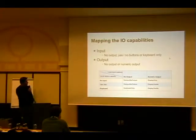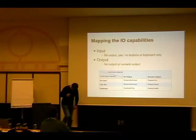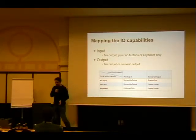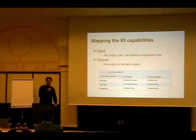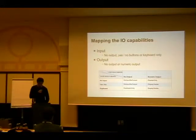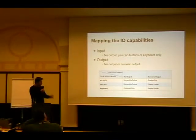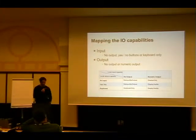The specification has a chart mapping IO capabilities. For input, you can have no input, a yes/no button, or a full keyboard. They separate between having two buttons versus a full keyboard — with a full keyboard you can enter a pin, while with only yes/no buttons you can only confirm whether the pin code is correct. For output, you have either no display or the ability to display a numeric number. In the end, the numeric number is only four digits, since that's enough entropy to create a secure link key for authentication and encryption.